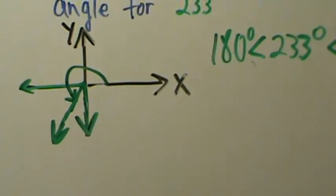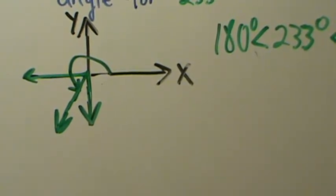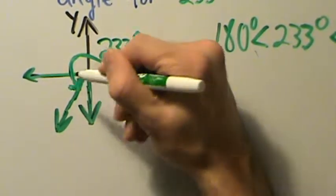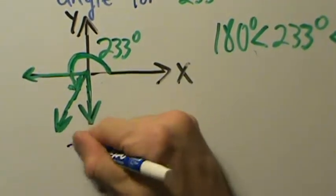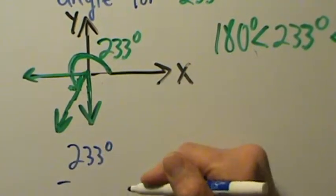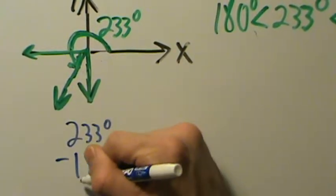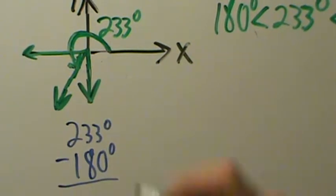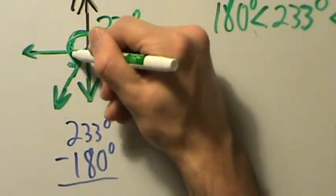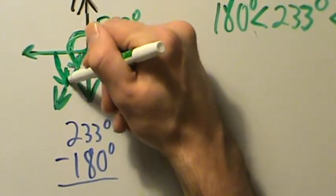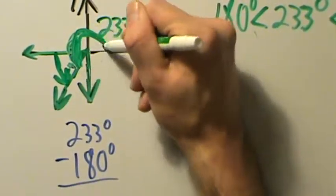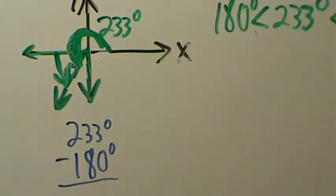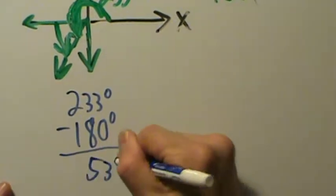So if we're in quadrant three, how do we get the reference angle? In quadrant three, take the entire angle and subtract off the piece we don't want, which is 180 degrees. So we take 233 degrees and subtract off 180 degrees. If we take the entire angle, 233 degrees, and subtract off this piece, we'll be left with just this piece — which is our reference angle. So 233 degrees minus 180 degrees equals 53 degrees, and that's our answer.